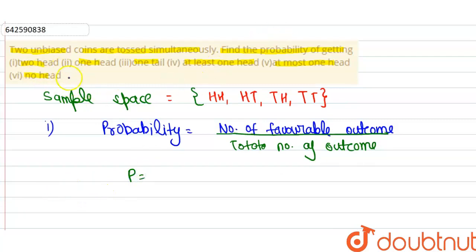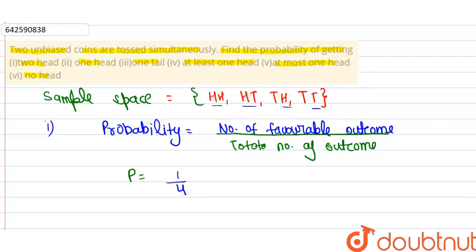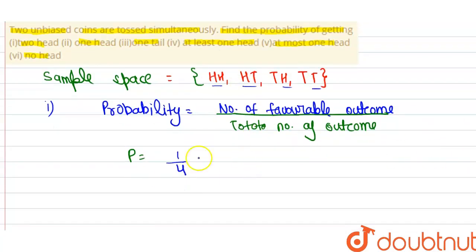For case one, we have to find the probability of two heads. There is only one case in which two heads appear, so the probability is one by four, since the total number of outcomes is four.